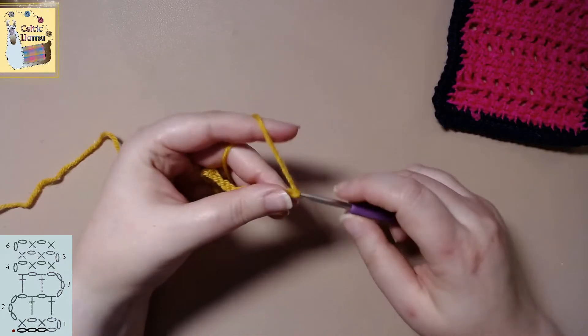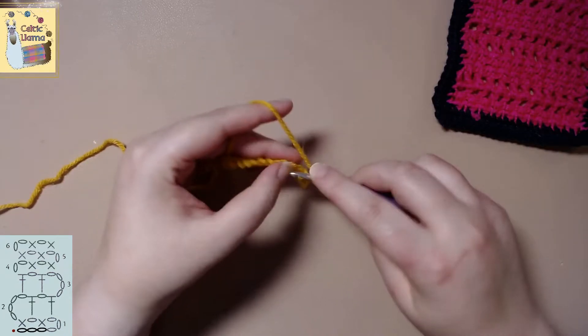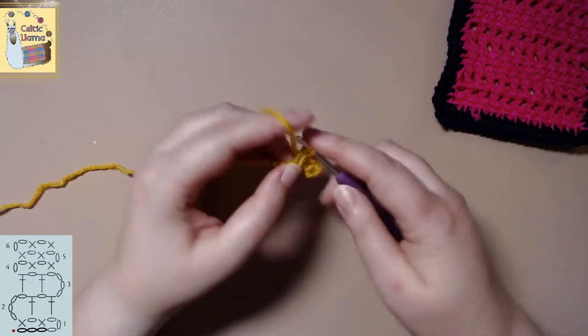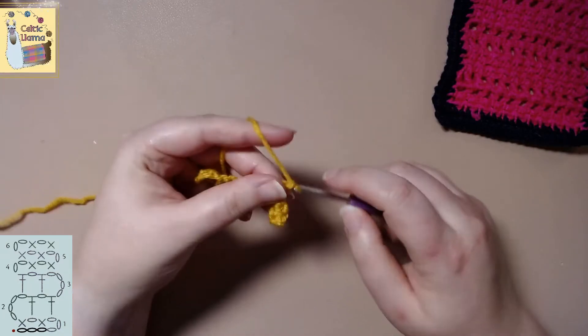Then we will chain one, skip one, single crochet. And we'll repeat this to the end of the row.